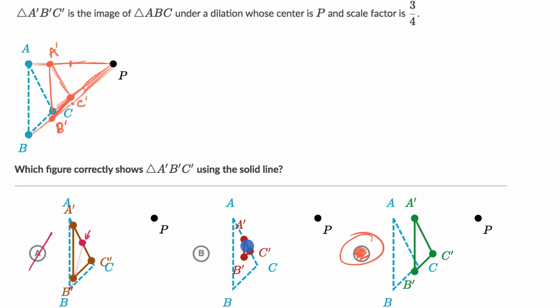It still looks like they are using this as a center of dilation. But this scale factor looks like it's much closer to 1 fourth or 1 third, not 3 fourths. So that's why we can rule that one out as well. We like our choice C.